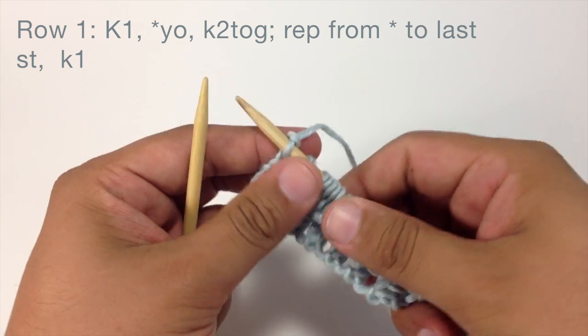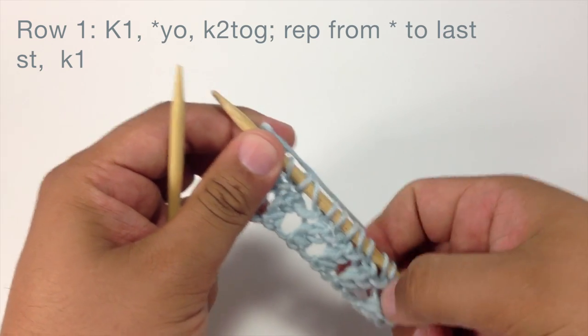So repeat row one until you have reached your desired length. And that's how you knit the faggot stitch.